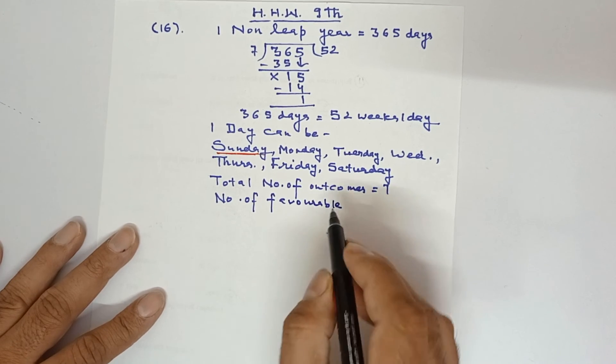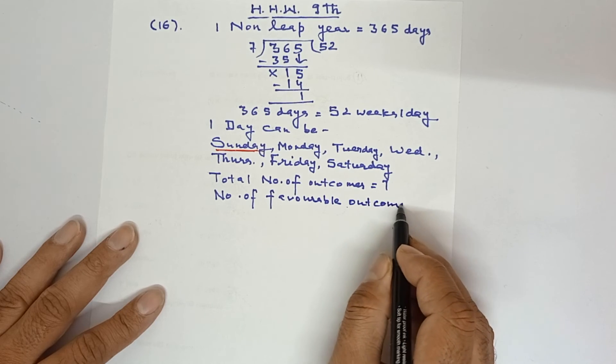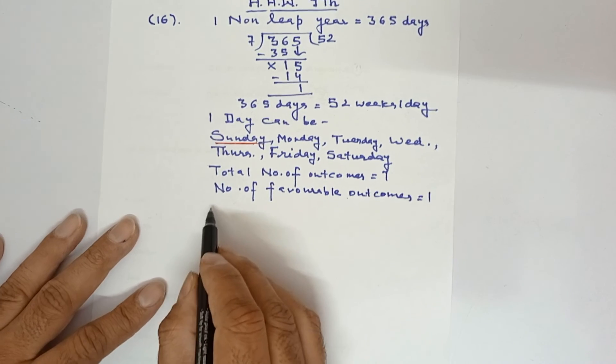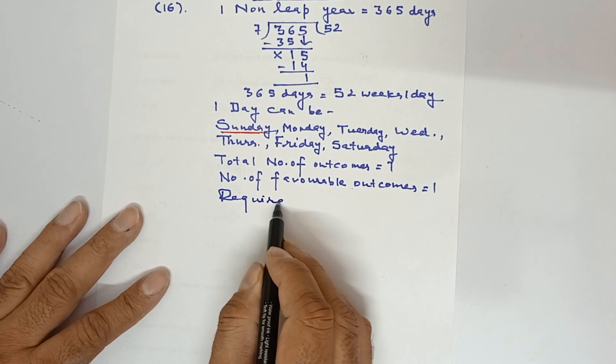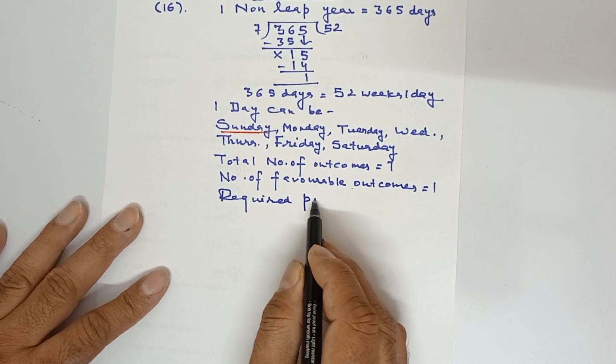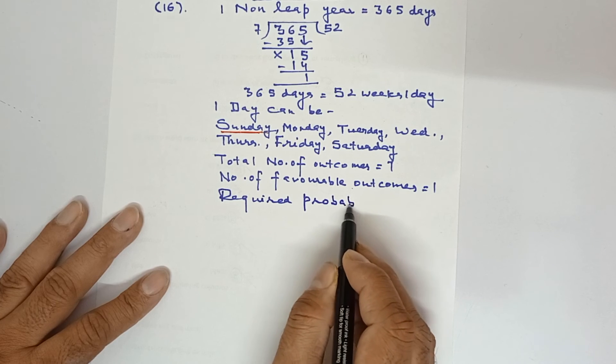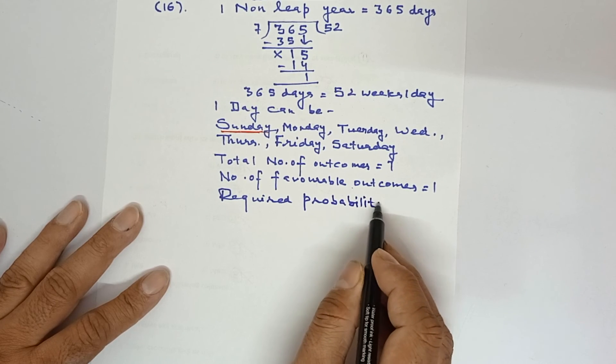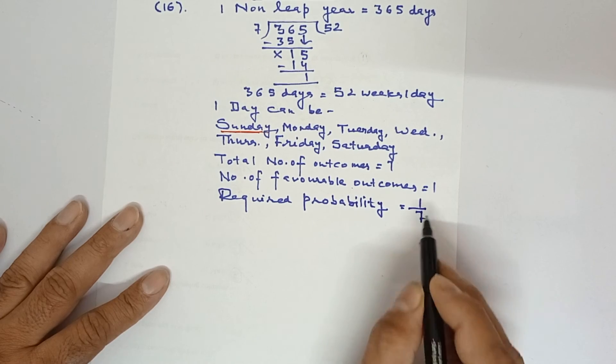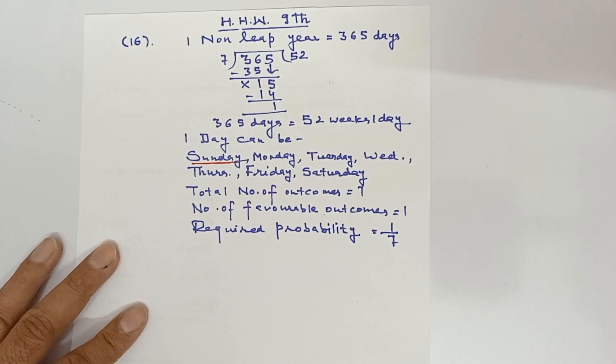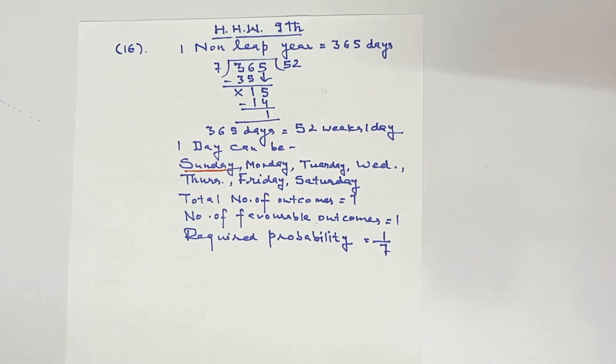Number of favorable outcomes - so favorable outcome is only one. Required probability: probability is number of favorable outcomes upon total number of outcomes. So it is one upon seven. I hope you have understood this question well.